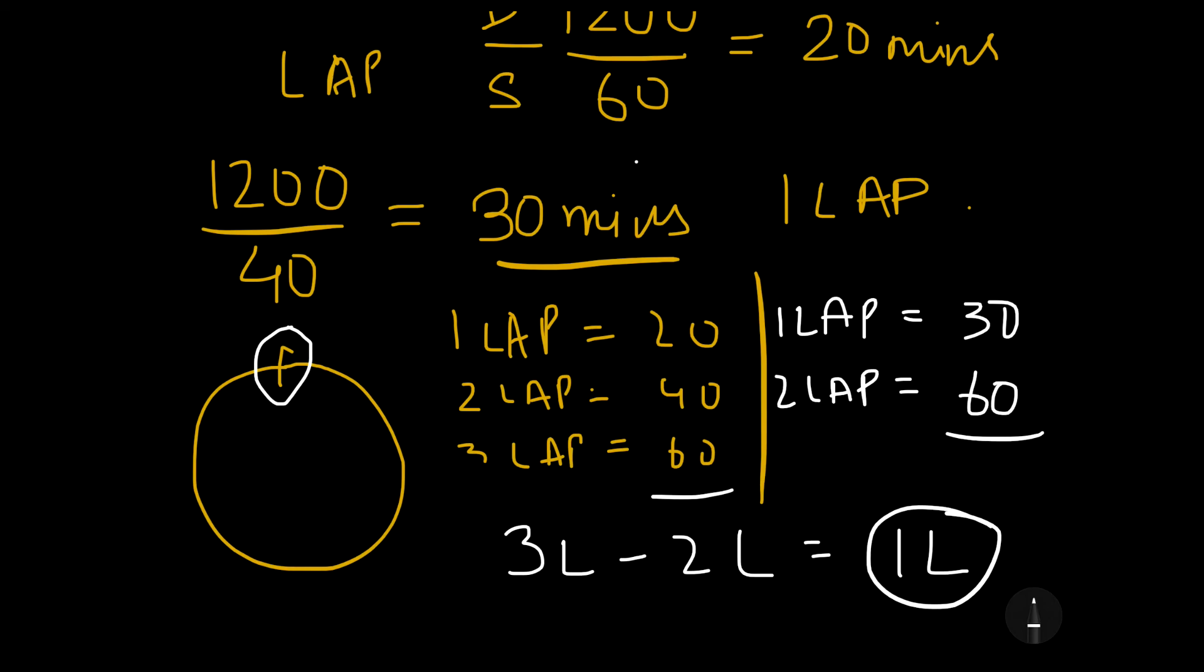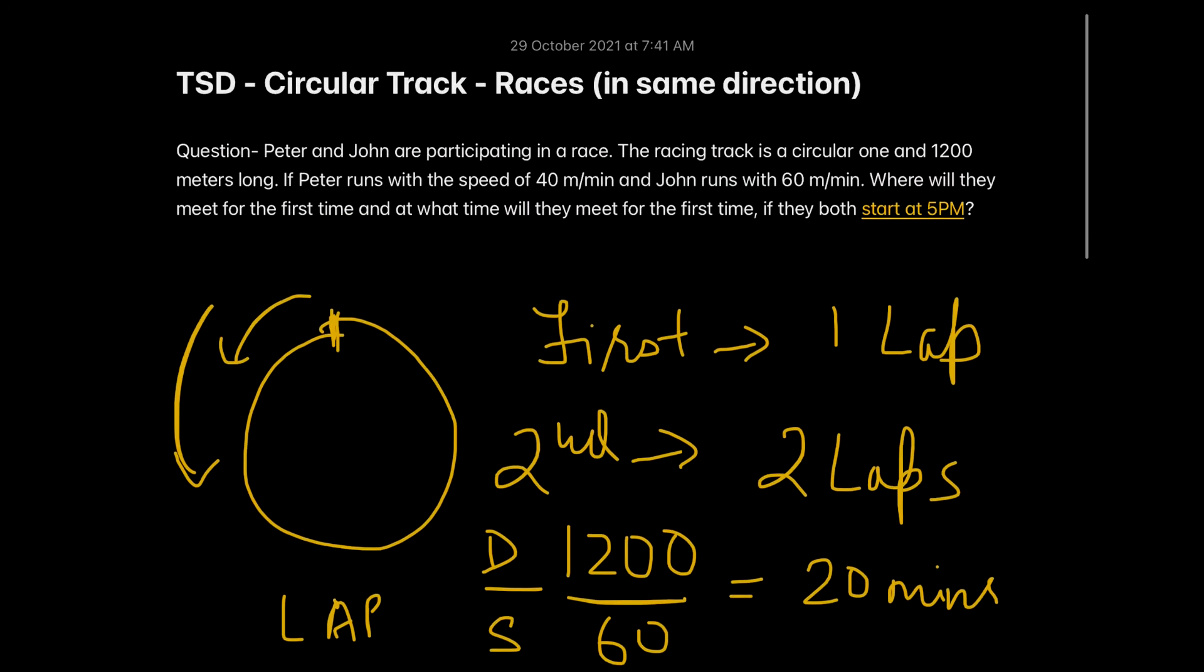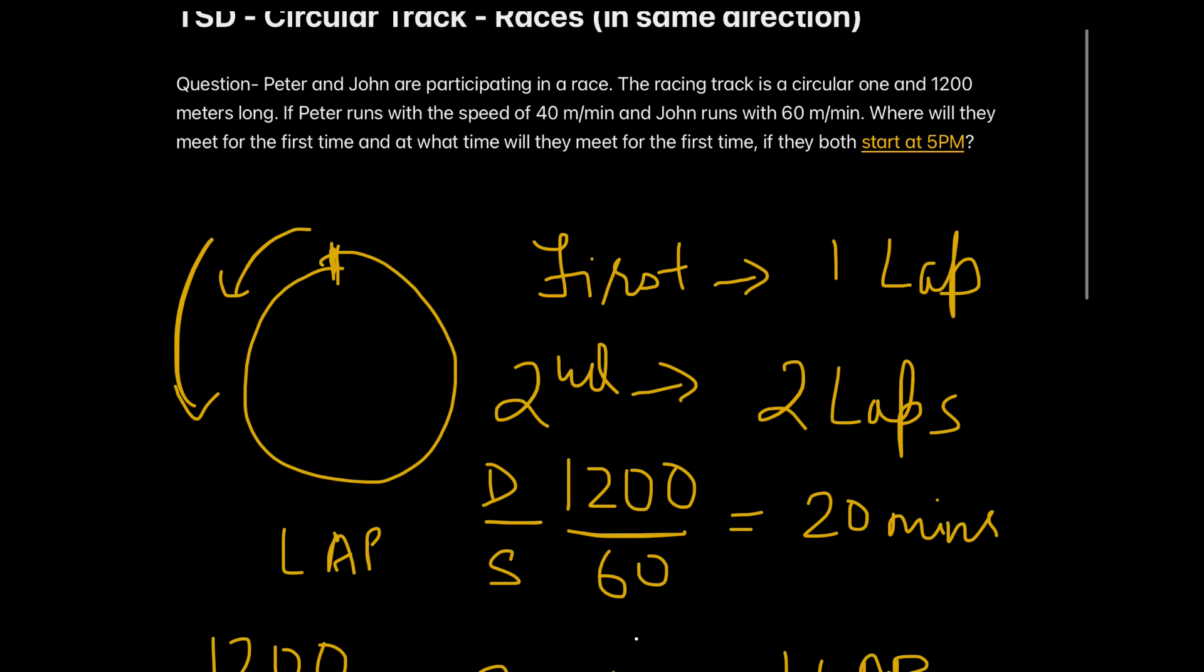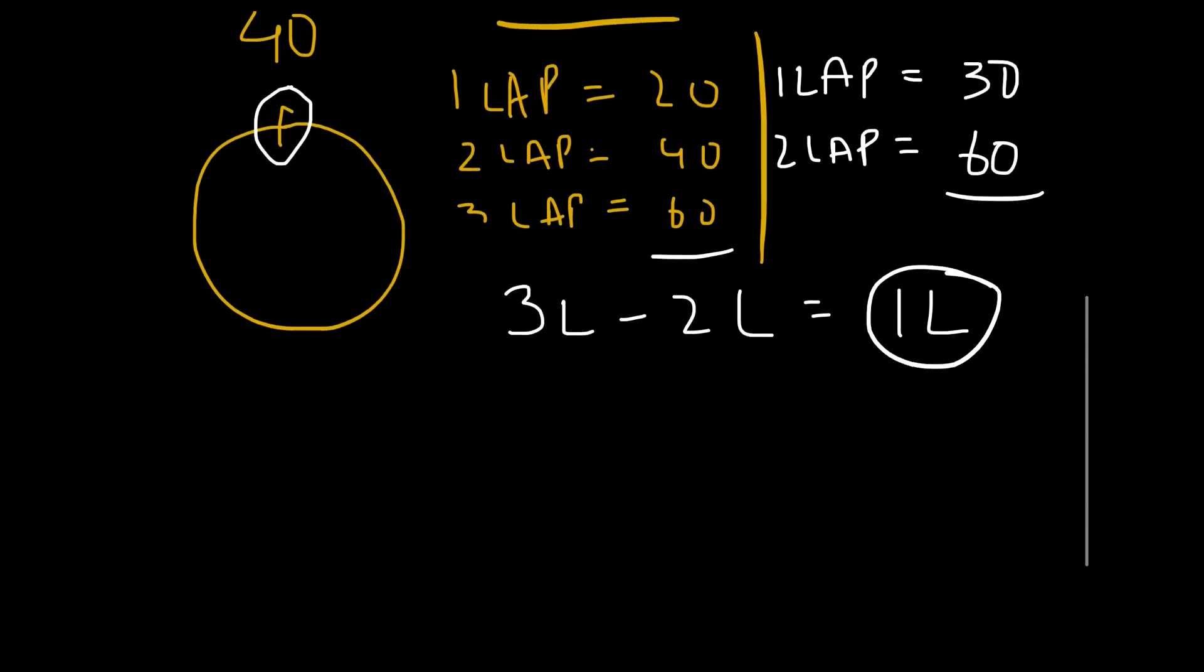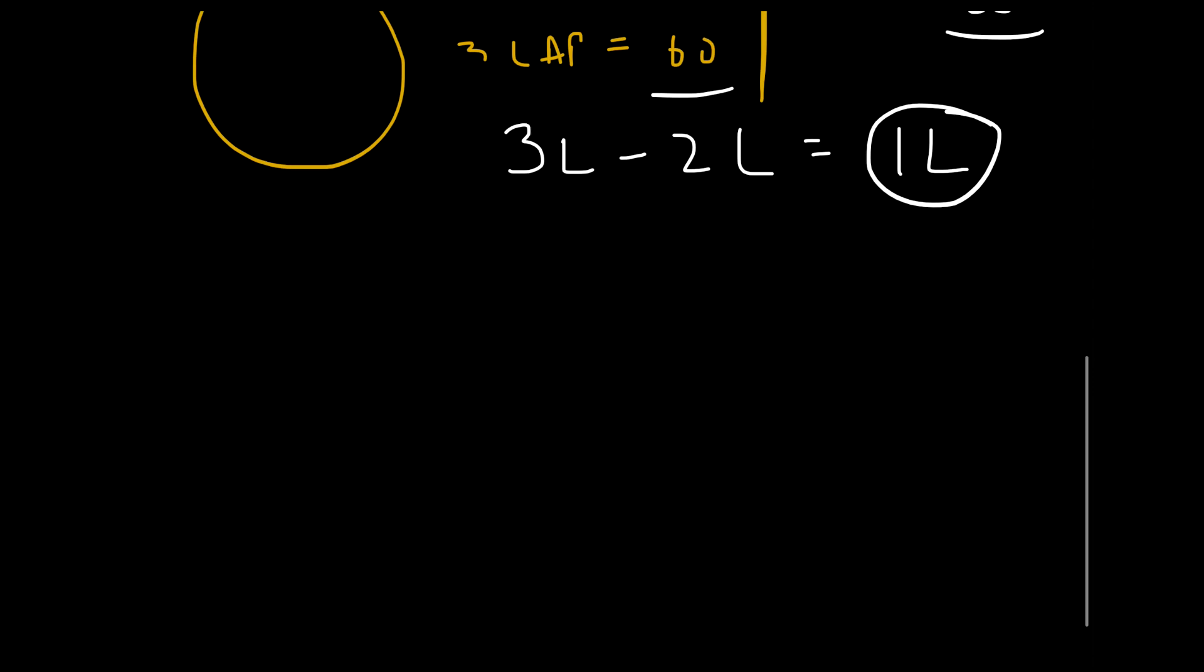So getting back to the question, the question was asking you where are they meeting for the first time. So they are meeting for the first time of course at the starting point and with a lead of one lap. And if they start at 5 pm, then 60 minutes is one hour and 5 pm plus one hour gives us the answer as 6 pm.